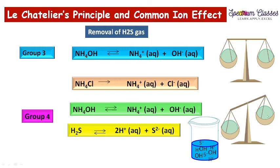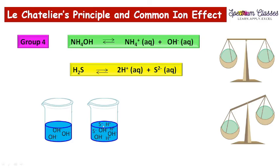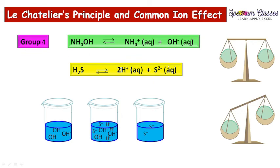Because H⁺ is removed by OH⁻ to form water, only S²⁻ remains. With H⁺ depleted, the left side of the equilibrium is lighter, so more dissociation of H2S occurs to restore balance. This produces a higher concentration of S²⁻. Since the Ksp for Group 4 metal ions is high, a higher ionic concentration of sulfide is required — and this higher S²⁻ concentration meets that requirement, so Group 4 metal sulfides precipitate.